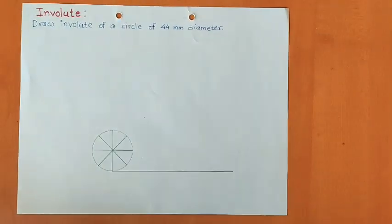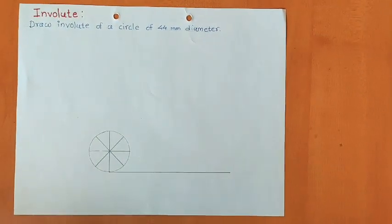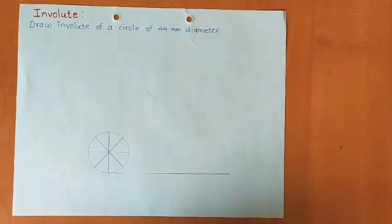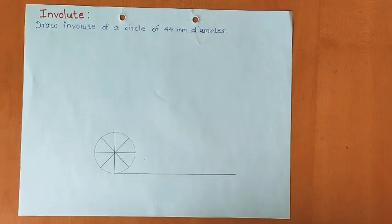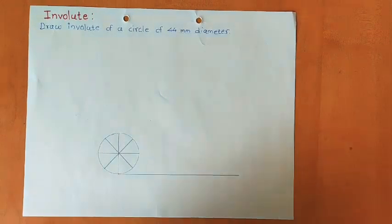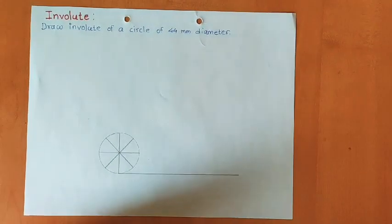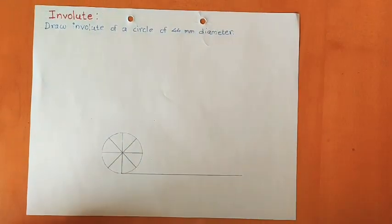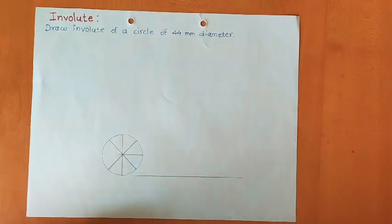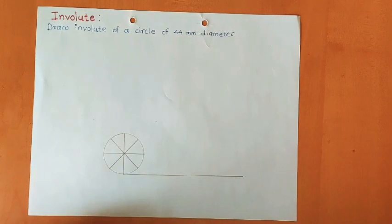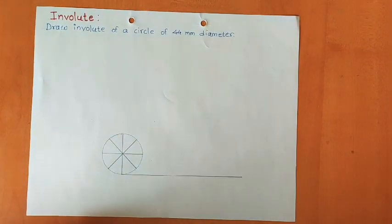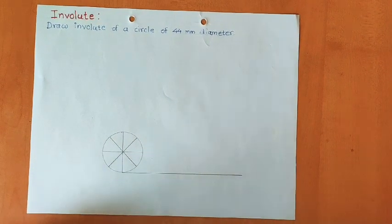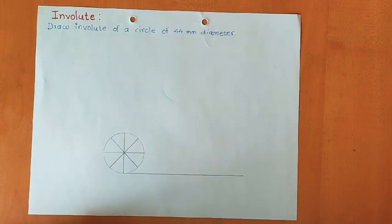Hello everyone, I am assistant professor Sri Aishind, and I welcome you all again to the next lecture on engineering curves. Today we are going to study Involute. Involute is a curve which is traced by an end point of a line or end point of a string if it is wound or unwound around a circle or any polygon.